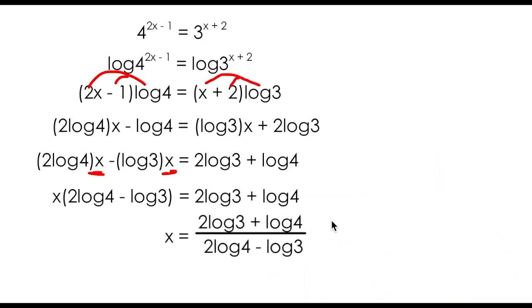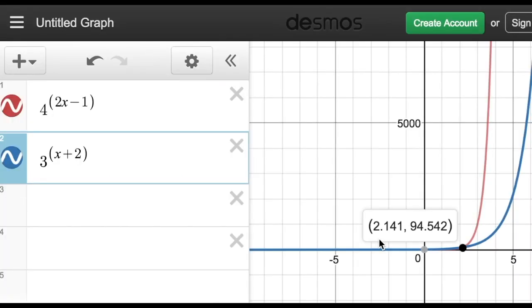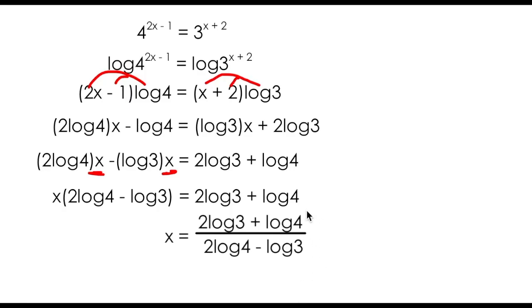Now log equations are kind of similar to trigonometric equations in that we like exact answers. I mean if you punch this into your calculator, you're going to see that you get approximately 2.1407, which you might remember was the solution that we got before from the graphing calculator. So either of these is correct, but this one's just considered more exact.